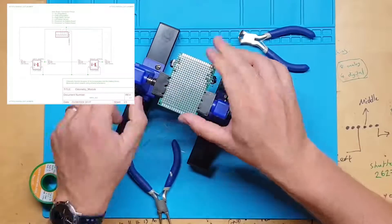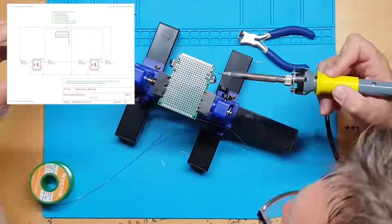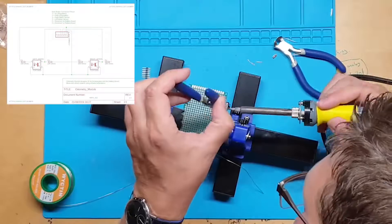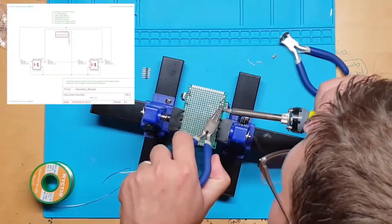Next I will add a 10 kilo ohm resistor to the input of the infrared sensor. The value of this resistor determines how sensitive the sensor is. If we use a small value resistor such as a 2 kilo ohm resistor the sensor will be less sensitive because the supplied current will be greater.